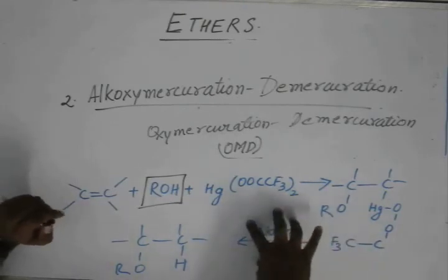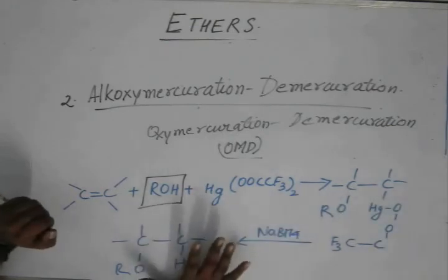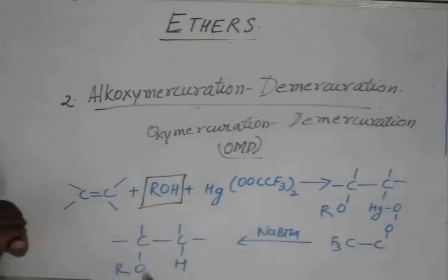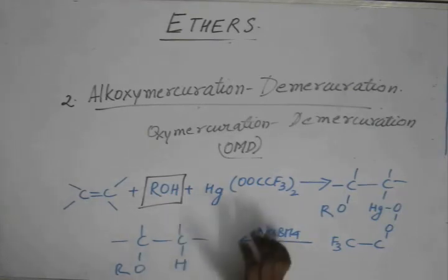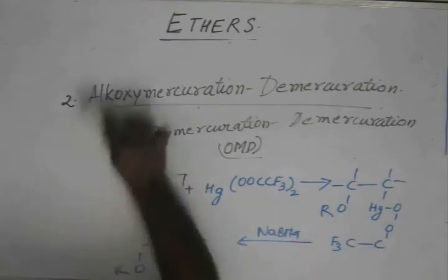We give NaBH4, that is a reducing agent. This whole mercury salt is reduced and we are left with the ether. I hope you have recapitulated by now what was happening in OMD and what is happening in AMD. These two are very similar.